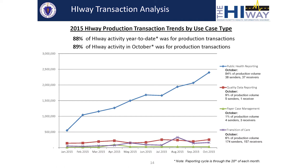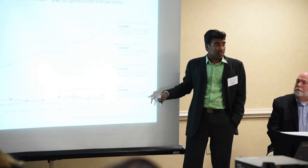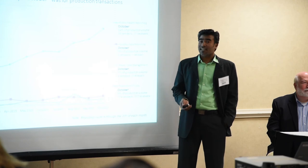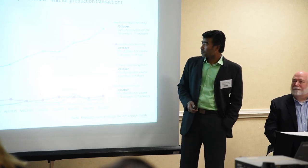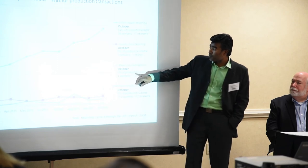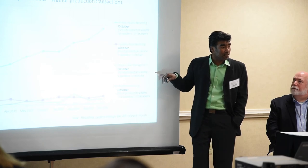Here is a breakdown of what those 3.2 million monthly transactions look like: public health reporting is the majority of data at this point in time, but we are also swiftly growing on transitions of care — 174 sending organizations and 157 receiving organizations in some form. That's true care coordination being exchanged across the state. We also have quality data reporting for PQRS or clinical quality management, and care/case management where insurance companies receive patient data for their operations.